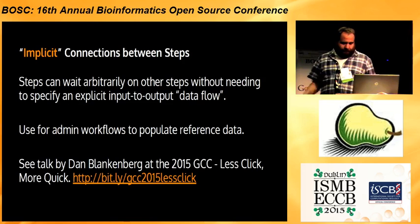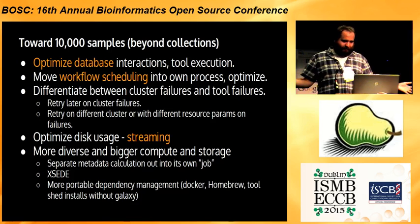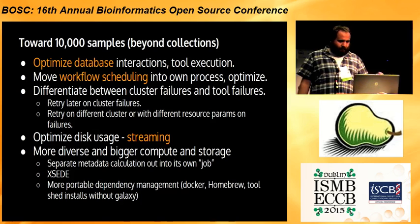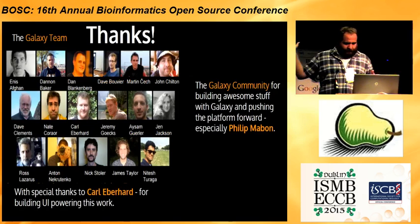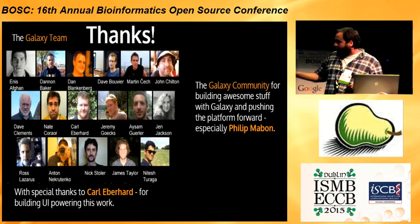For future work, we're aiming at 10,000 samples — people throw that around, and once we get there we'll want more — and we want to optimize the database interactions to do this. We're going to keep making the workflow scheduler more interesting to handle new workflows. Streaming was mentioned by Michael earlier, and that's an important application that will be needed for these larger workflows. Thanks to the Galaxy team — Carl, who's not here, did most of the UI for this and is doing a fantastic job on collections. A big thanks to the Galaxy community — they build awesome stuff, and specifically Philip Mavon has really pushed the collections work. That was the phylogenetics workflow, and he worked very closely with me on this. Thanks.